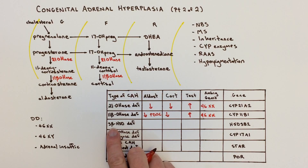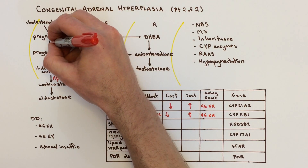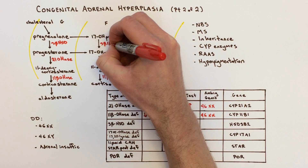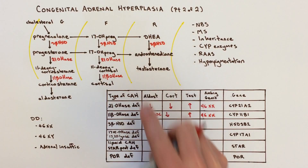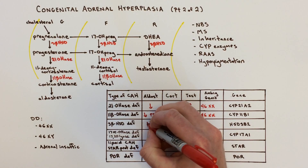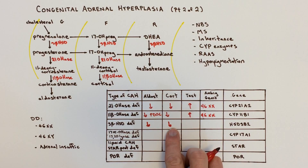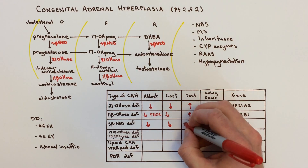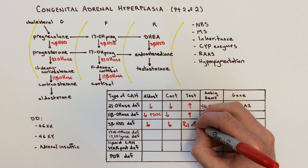Next is 3-beta-hydroxysteroid dehydrogenase deficiency. The enzyme acts at three places all along the top of the pathway. In this case, we get a failure to make aldosterone — so aldosterone is low — and a failure to make cortisol — so cortisol is low. For testosterone, something interesting happens: in females it's generally normal, and in males it's low.